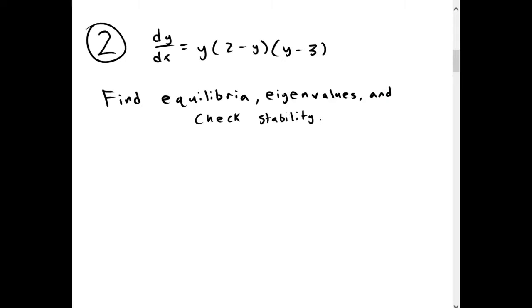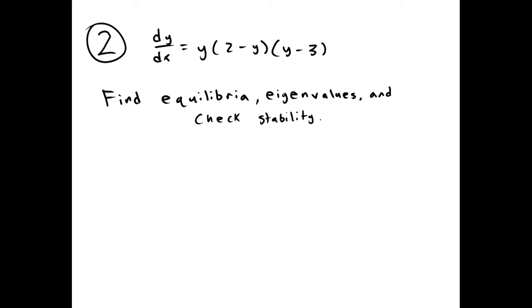For our second example, we have dy/dx equals y times (2 - y) times (y - 3). So we're going to find the equilibria, the eigenvalues, and check the stability of the equilibria.